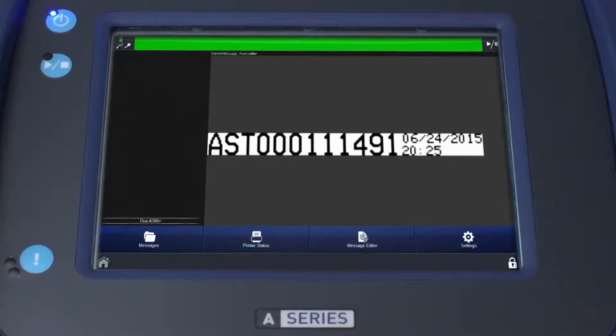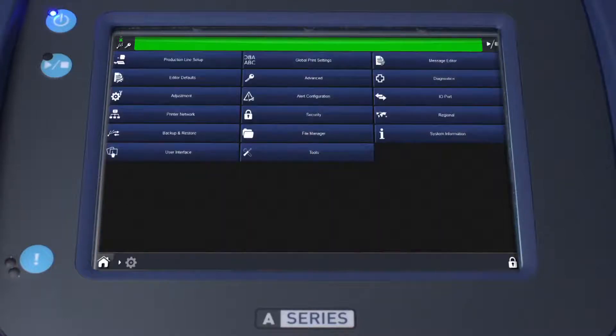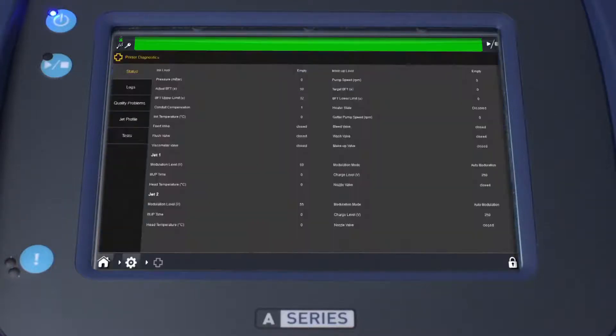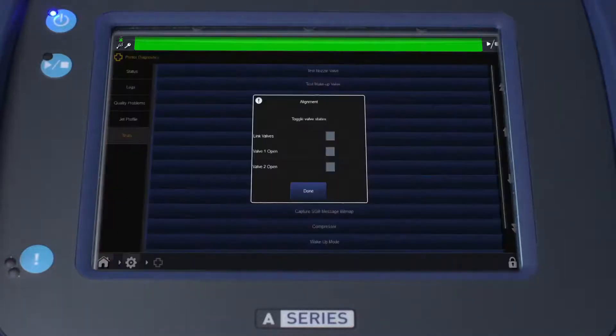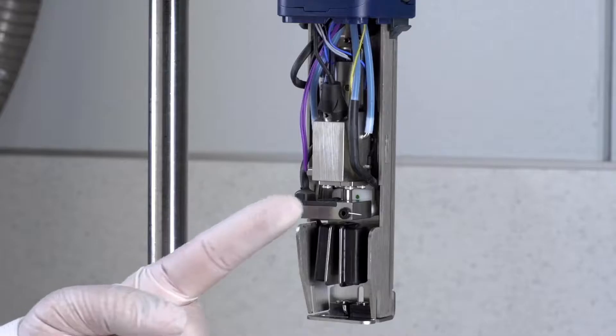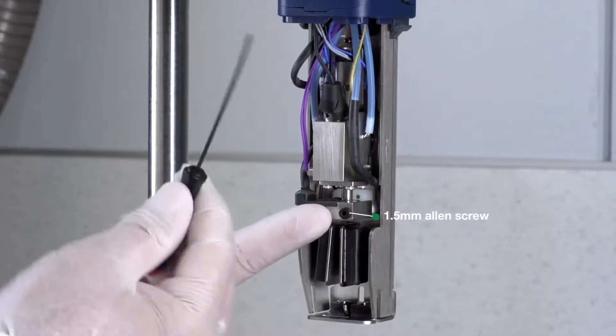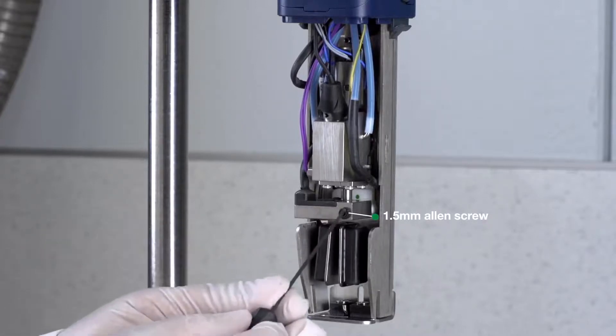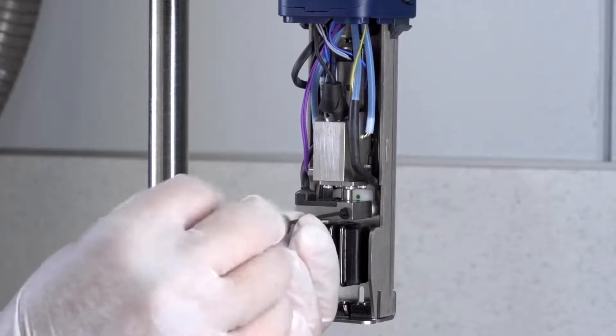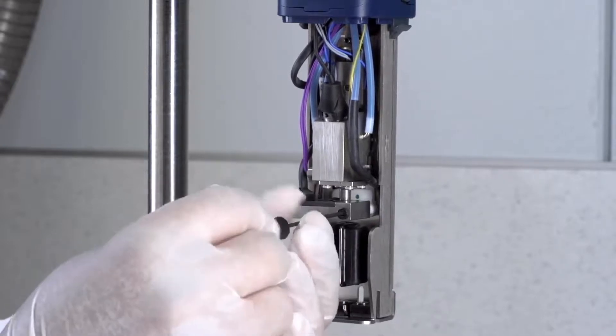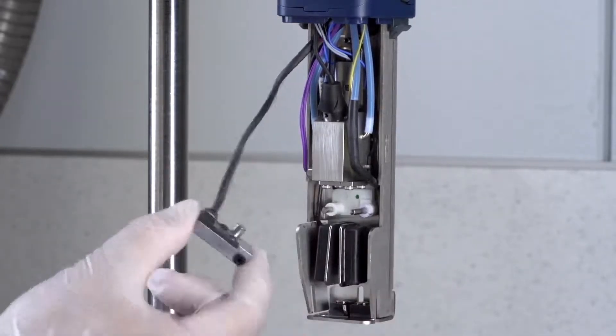Again from the front panel, select the Settings button, then Diagnostics, followed by Test on the lower left-hand side of the screen. Select Alignment, then select the checkmark to start the jet. Now remove the charge electrode by unscrewing the 1.5mm allen screw on the right-hand side. Carefully slide the charge electrode out of the way.